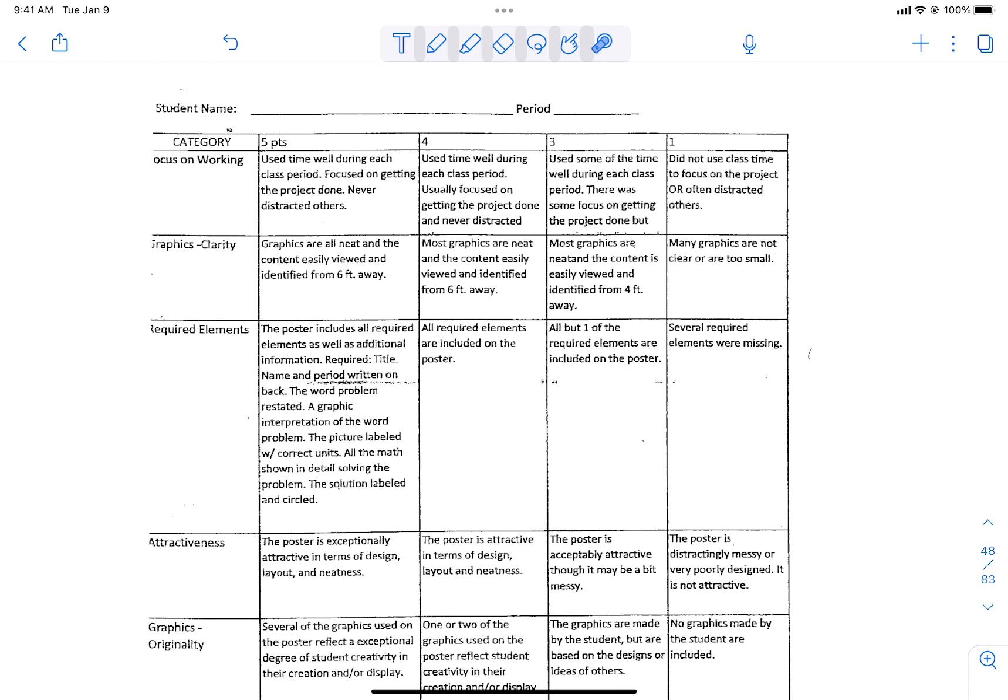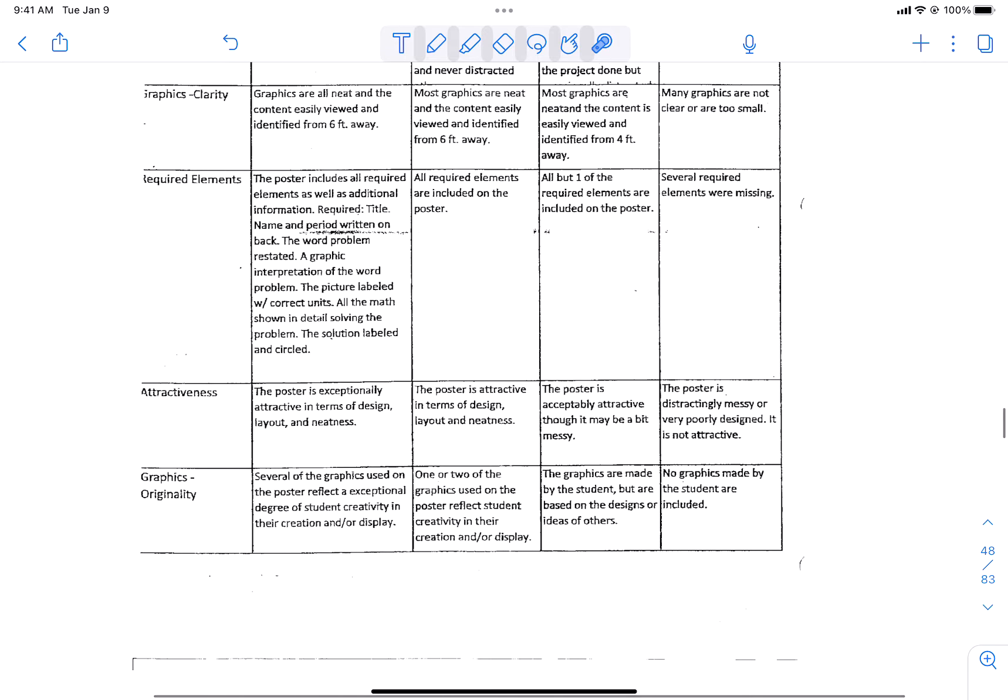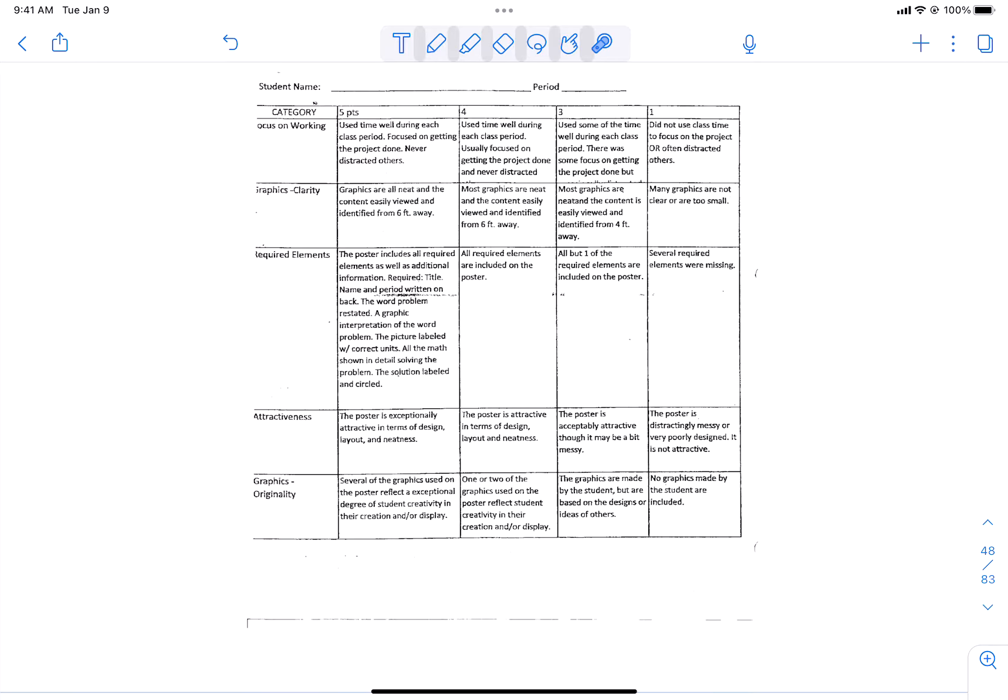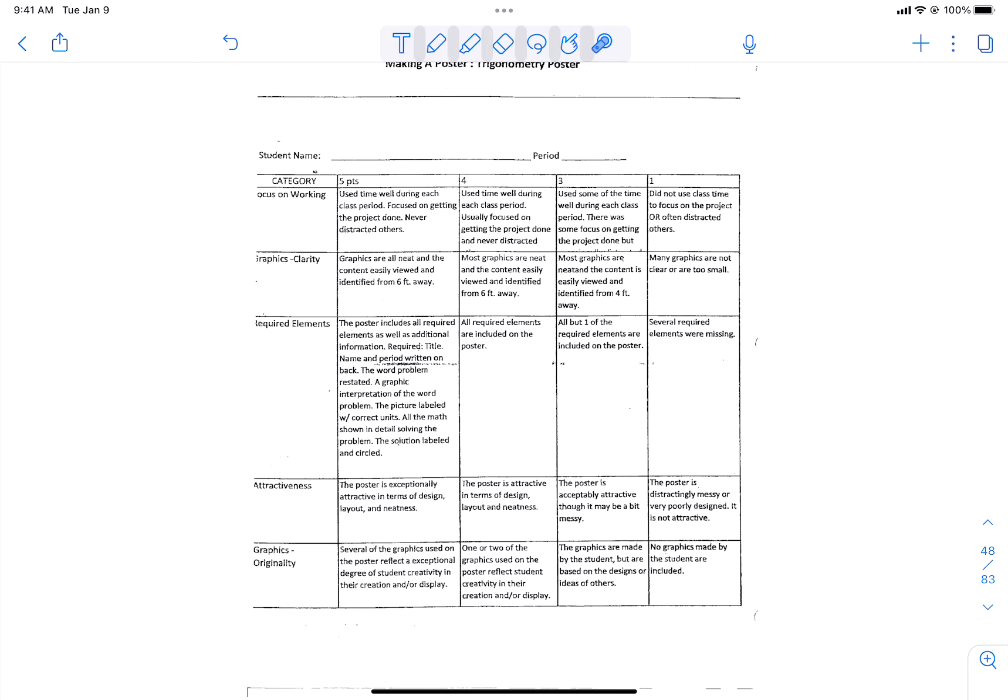Did I have the required elements? Did I have a title? Did I have the word problem restated, a graphic interpretation? I labeled everything and the math is correct. Did I try to make it attractive? And did I try to use some graphics and things that were creative? I didn't just make a triangle and be done with it. So you can get 25 points for the digital poster, which you're going to have time to work on tomorrow.